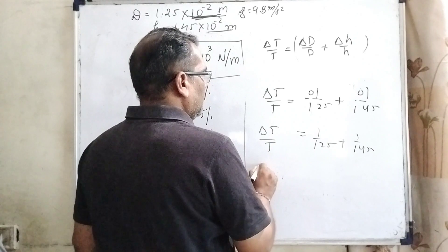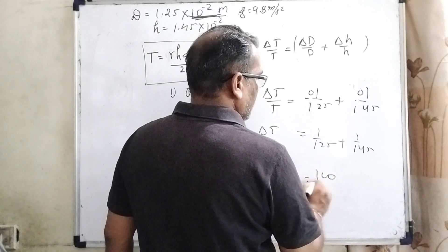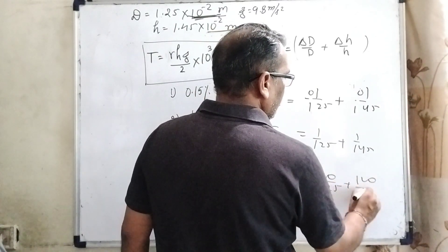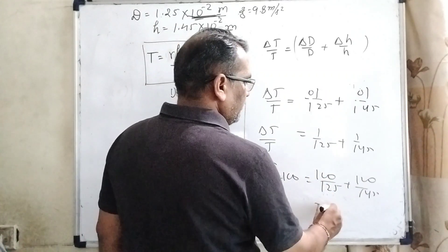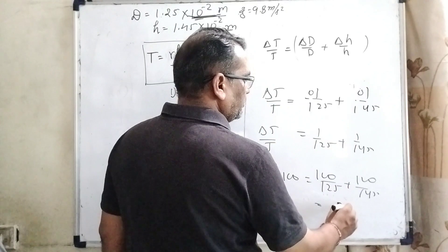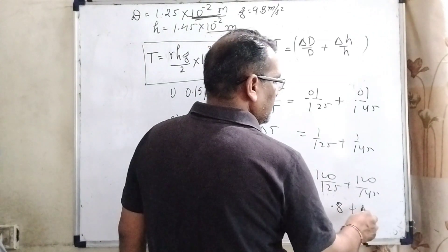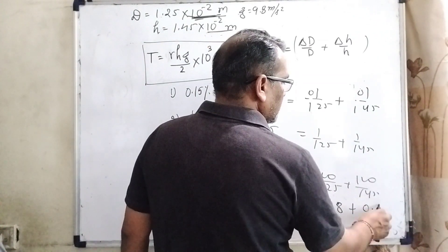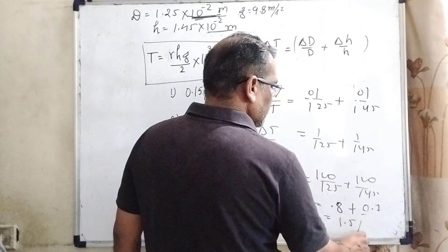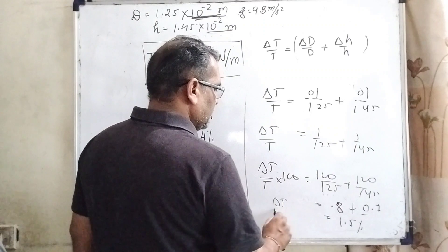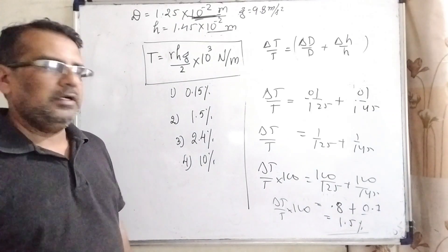Delta T by T. Now multiply by 100 both sides. Now it becomes 100 by 125 plus 100 by 145. Now, 100 by 125 means its value is 0.8 and here its value is 0.697. So now it becomes 1.5 percent. Delta T by T into 100. Therefore, it is the correct answer.